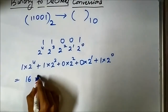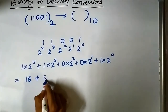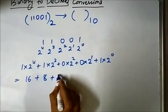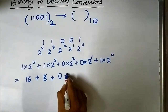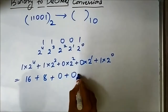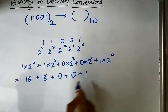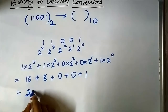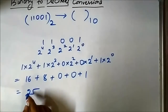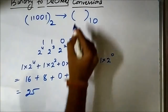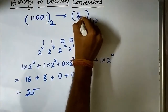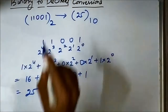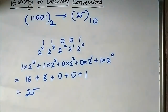So calculating: 2 to the power 4 is 16, plus 2 to the power 3 is 8, plus 0, plus 0, plus 1 equals 25. So the decimal equivalent of binary 11001 is 25.